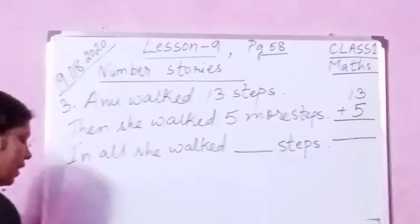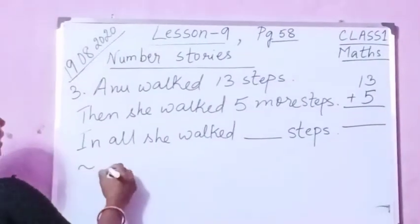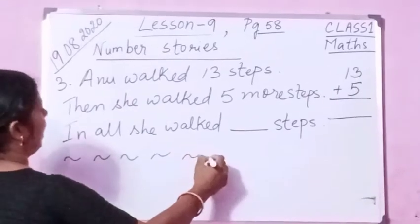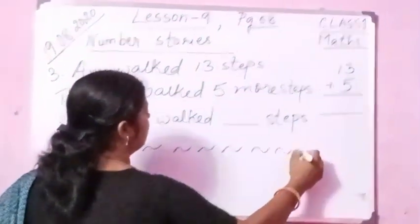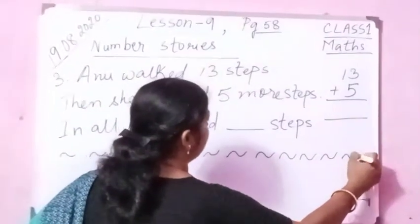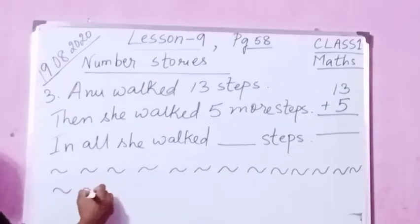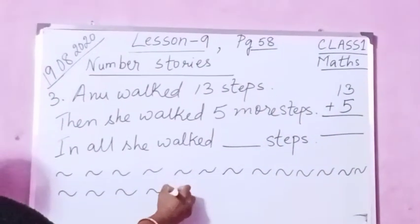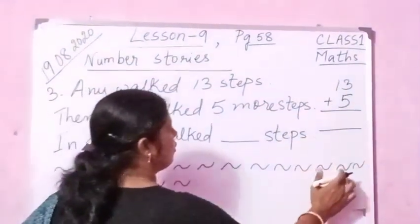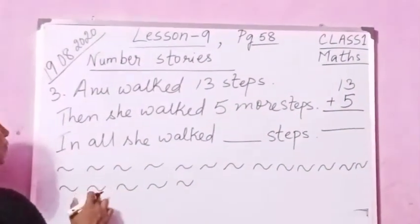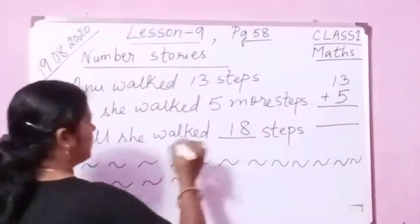Just steps we can make — we can draw small steps. Let us draw 1 through 13 steps. We have drawn 13 steps. Again 5 more steps — 1, 2, 3, 4, 5. Counting all together: 1, 2, 3 ... 14, 15, 16, 17, 18. So in all she walked 18 steps.